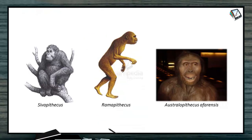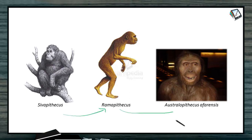Now, as mentioned, from Sivapithecus came Ramapithecus, from Ramapithecus to Australopithecus afarensis, who became Australopithecus africanus.